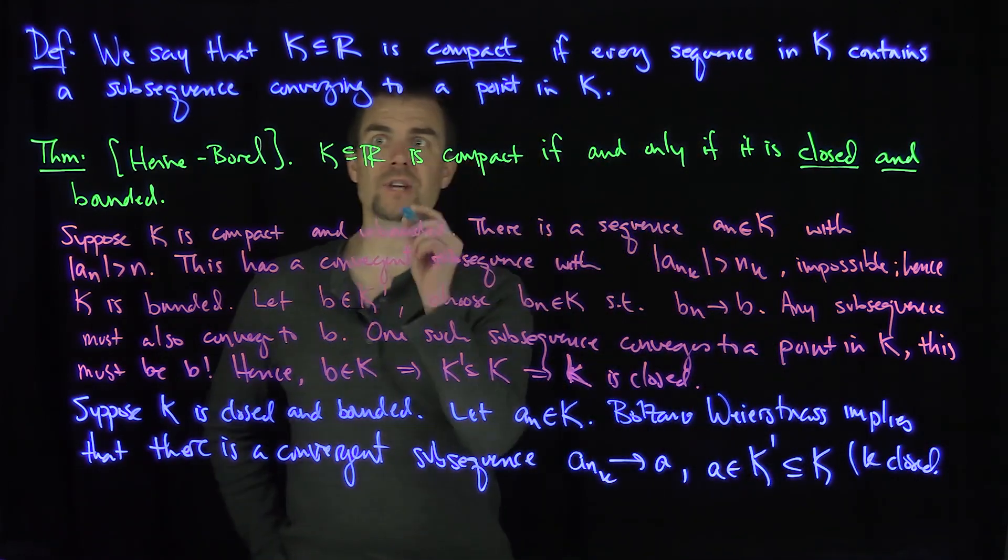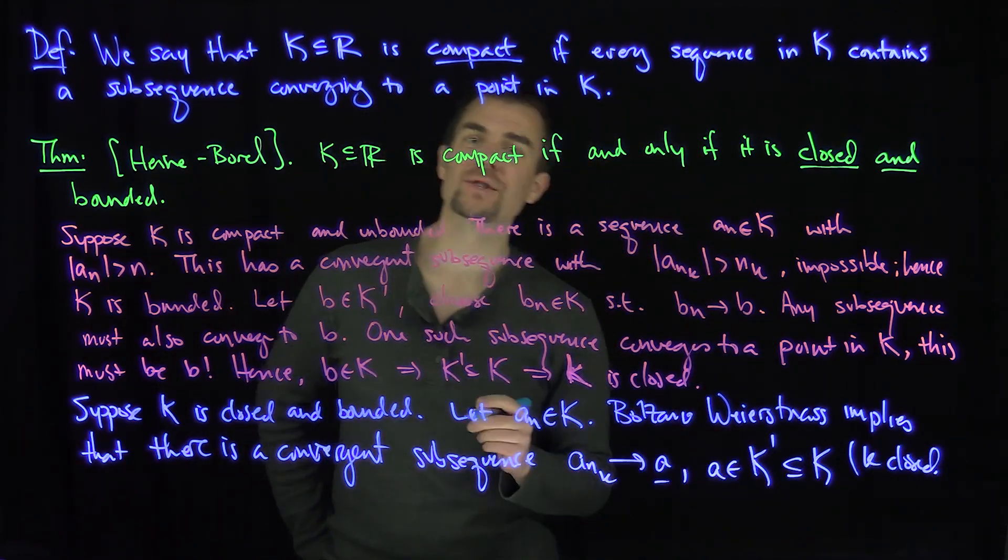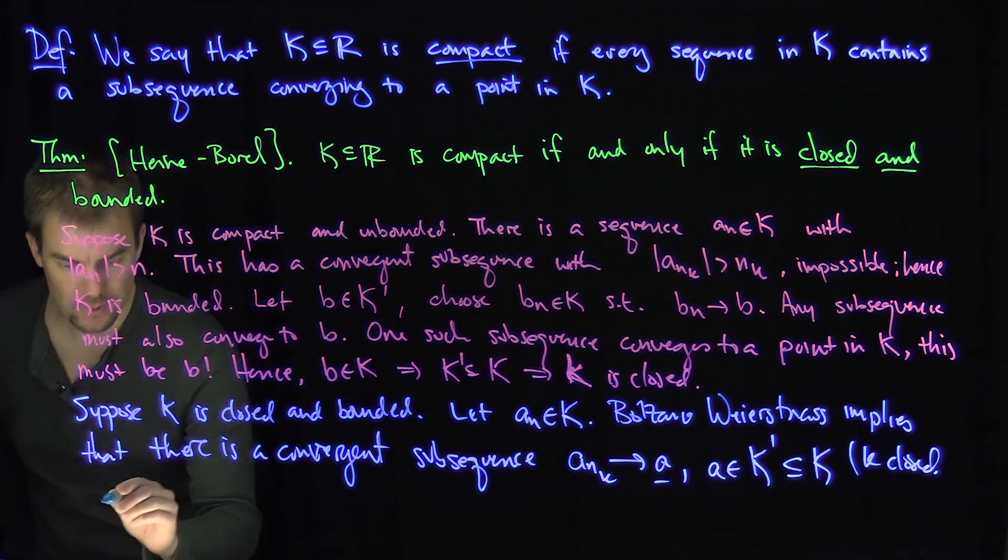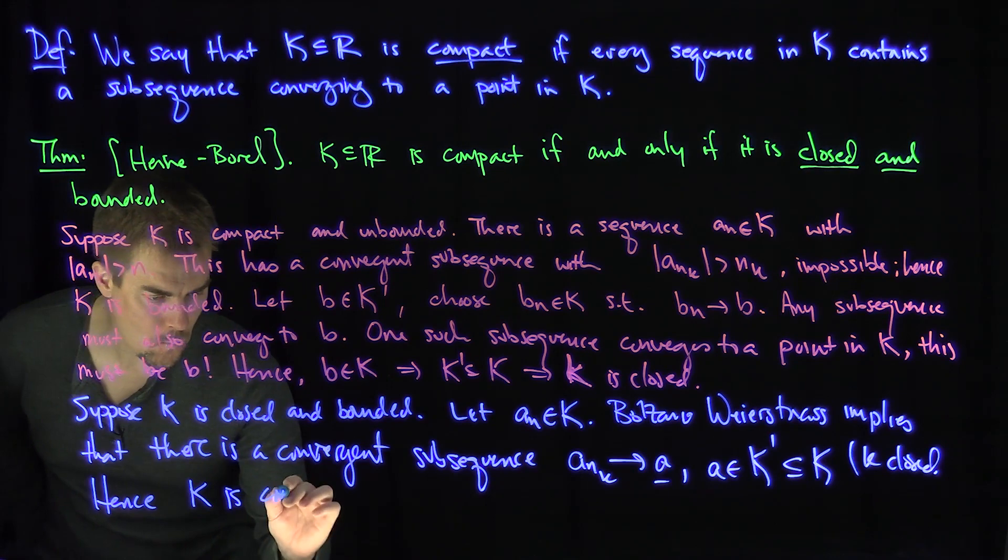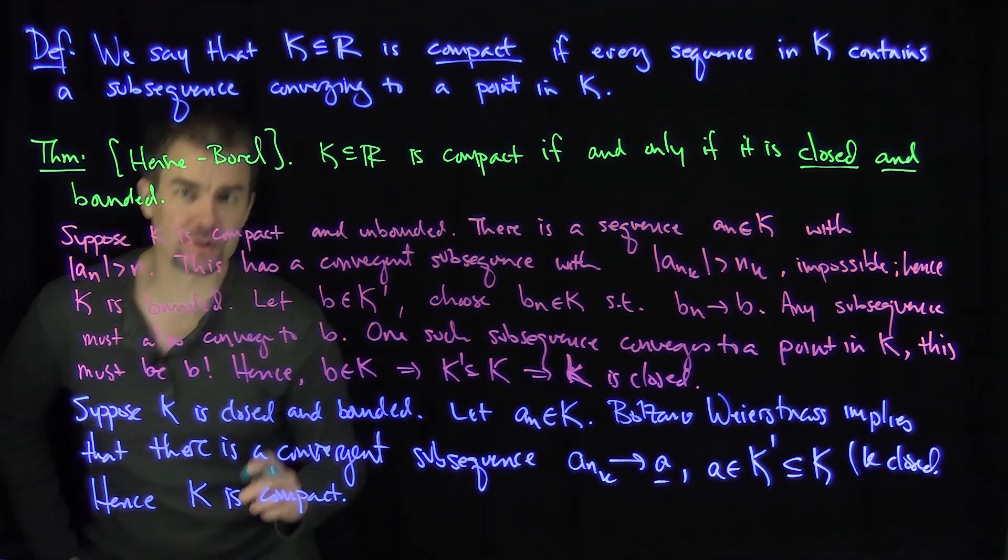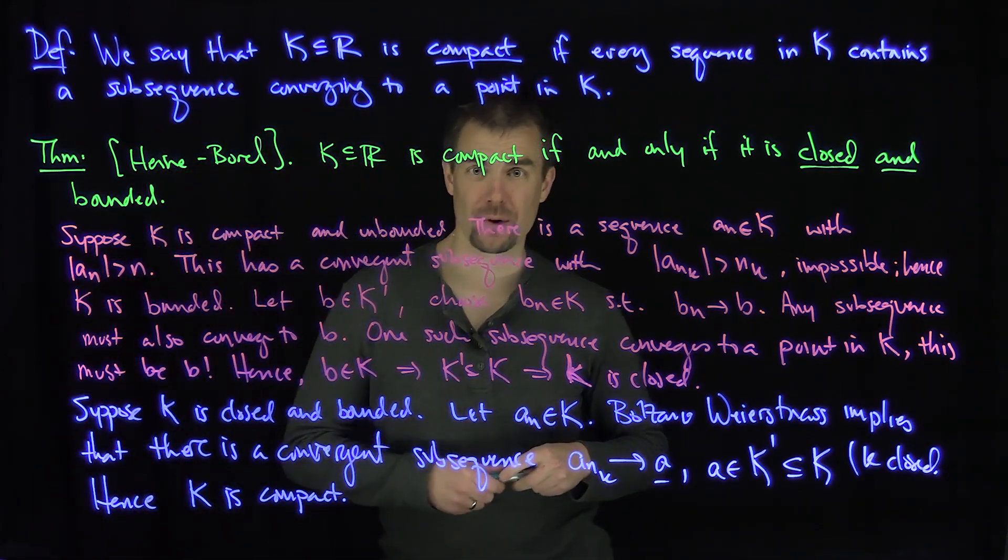And the limit points of k are contained in k because k is closed. So we've just found a subsequence that converges to a point a, which is in k, which implies that the set k is compact. And this gives us our first characterization of compact subsets of the real line.